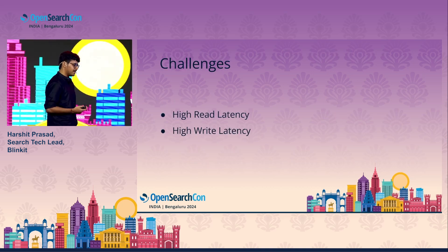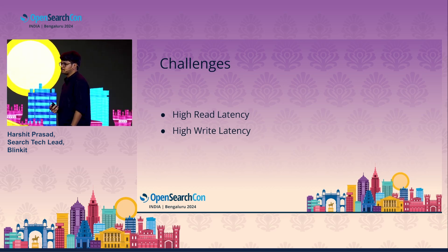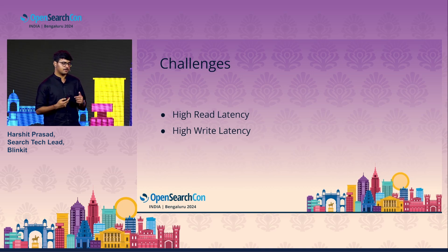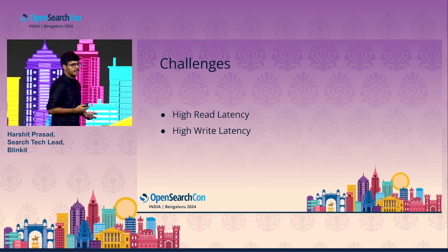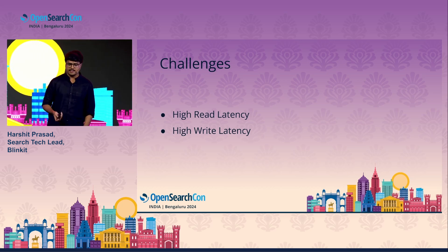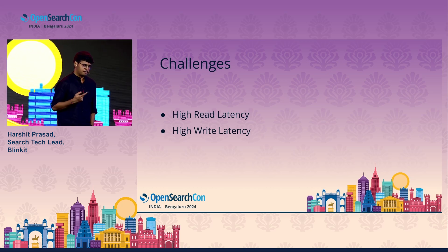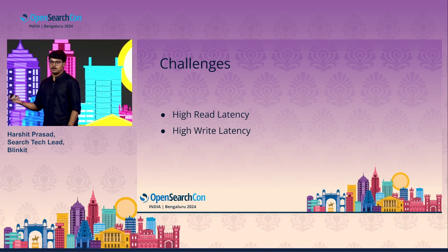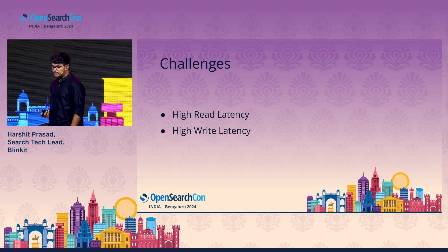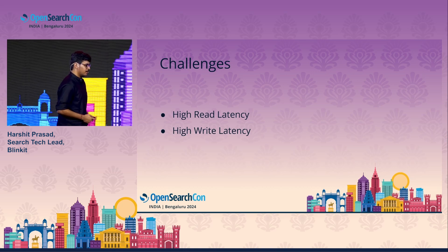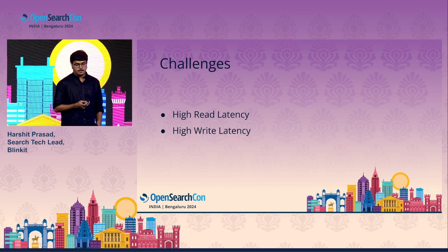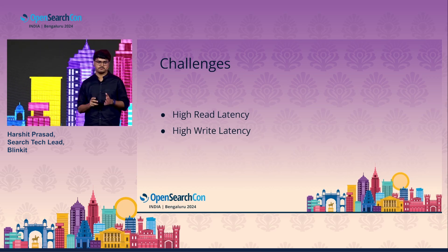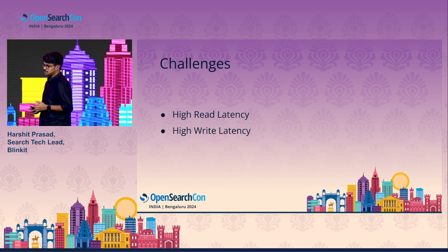Coming to the challenges — since Blinket is growing and with new product iterations and new product features being added on the app, we were facing two challenges. We were getting a linear growth in high read latency and write latency. High read latency was primarily because we were getting uneven traffic distribution across our data nodes. High write latency was because the number of updates we process in real time during festives gets very high, creating a lag in updating product information and degrading the overall app experience.